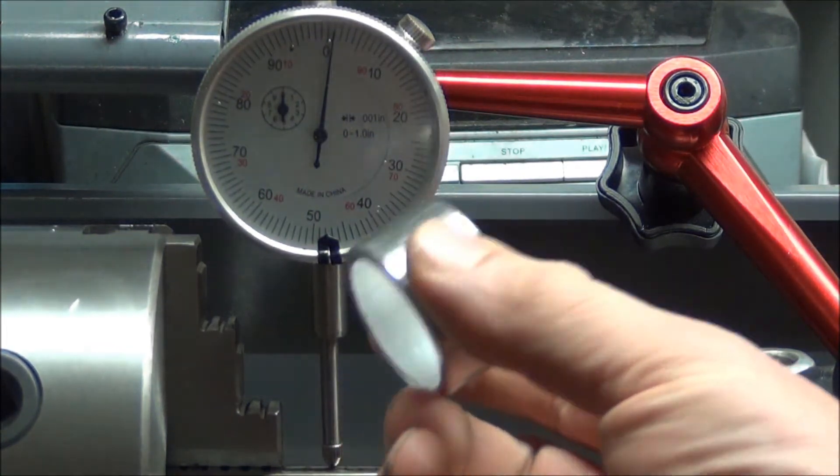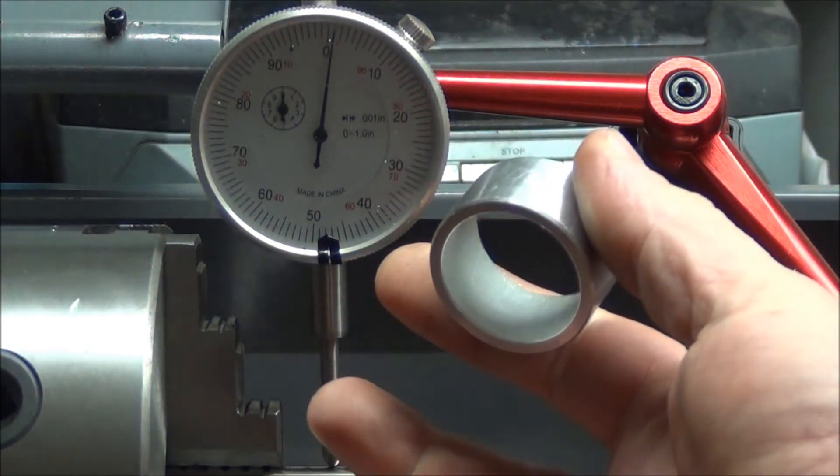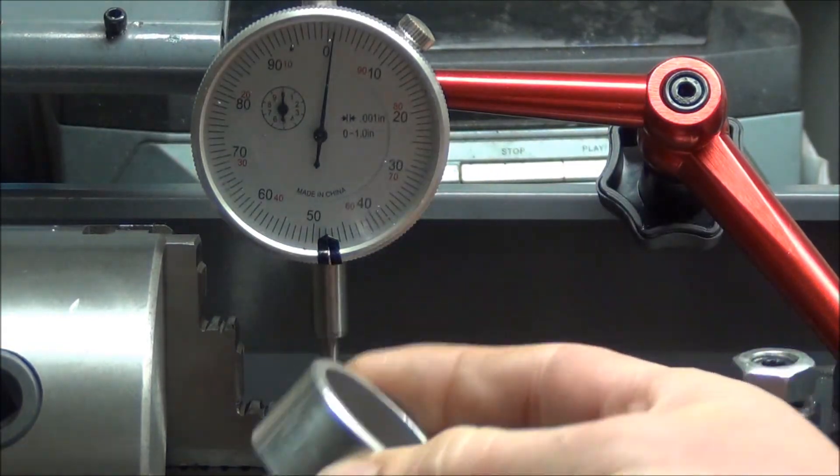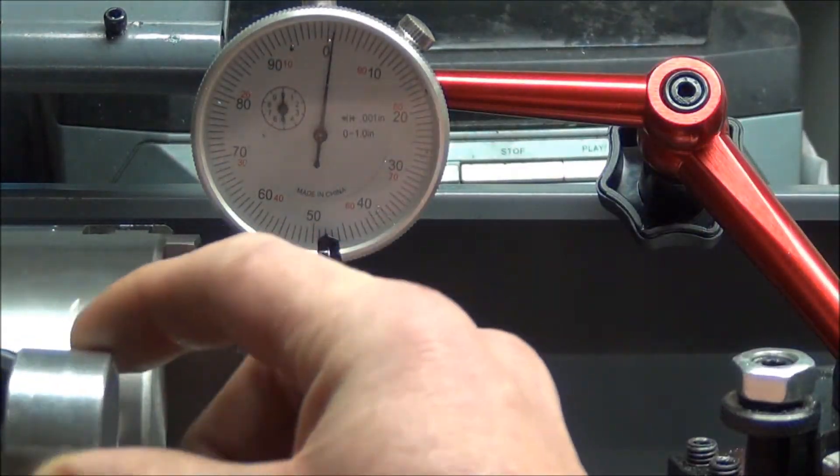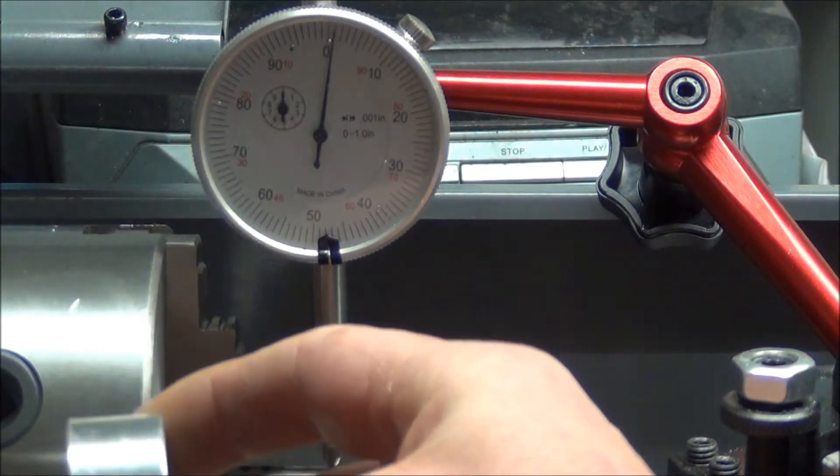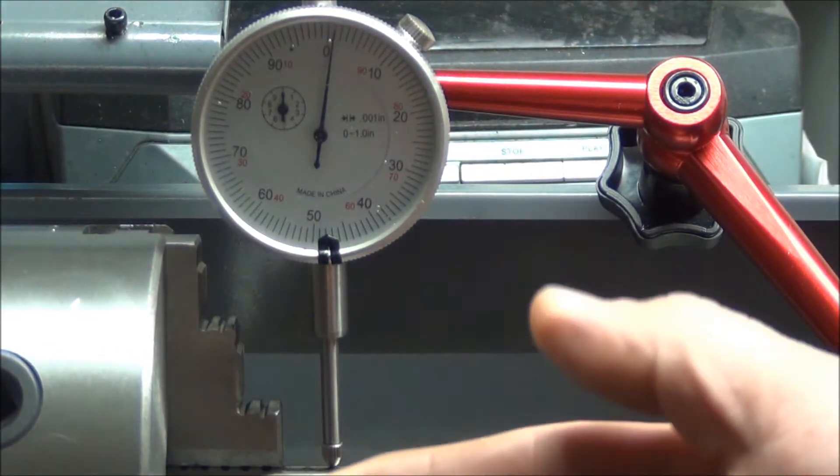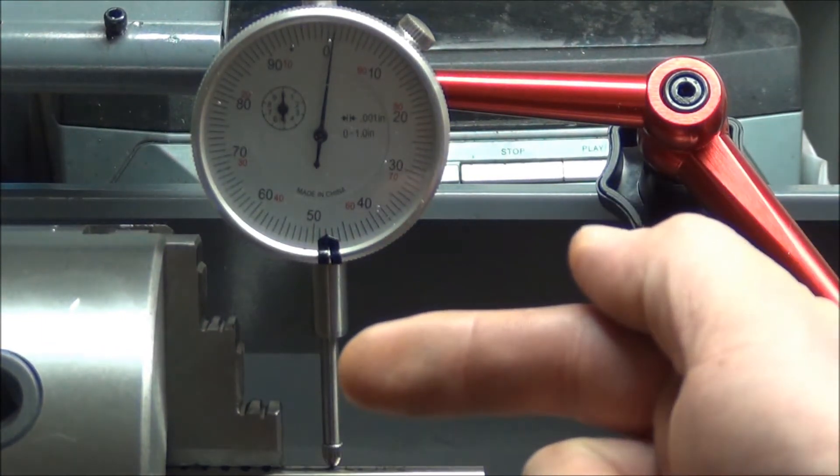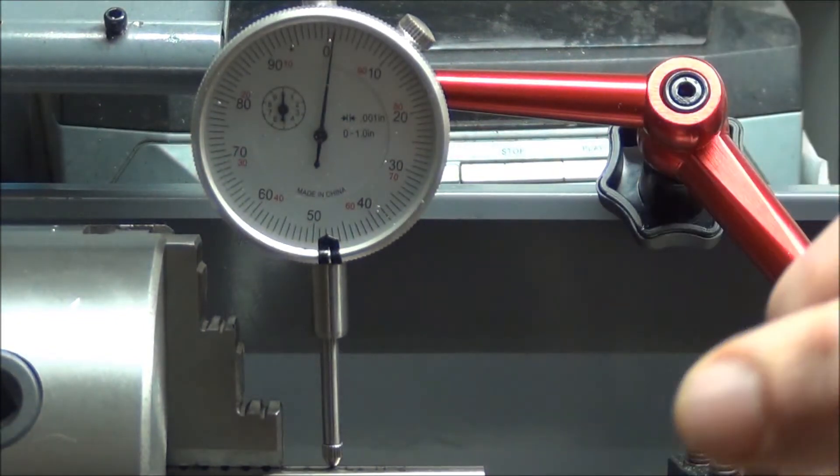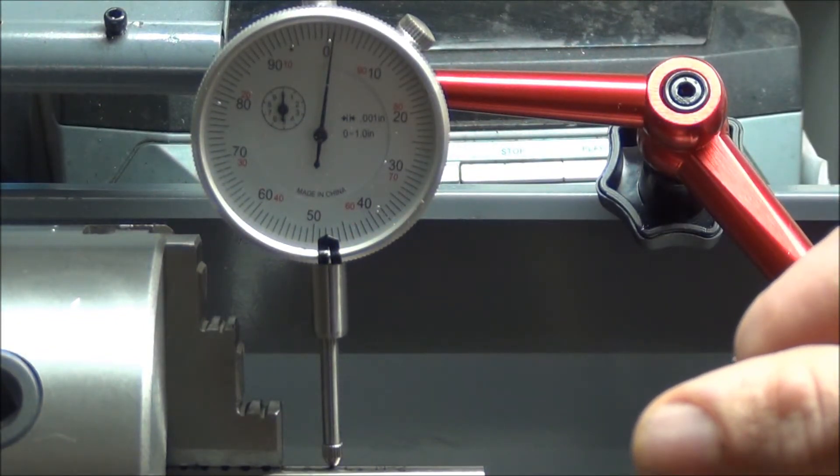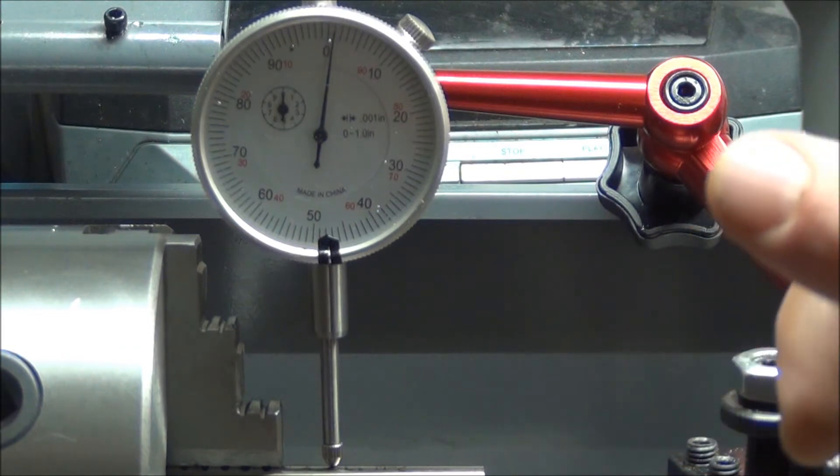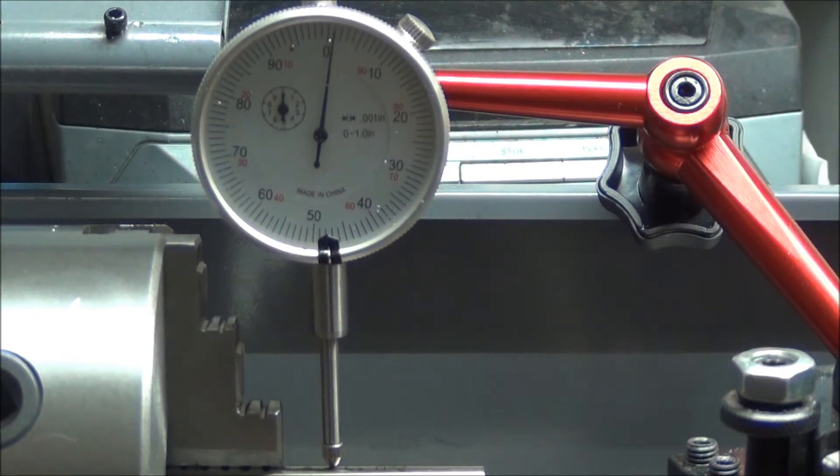I cut down the aluminum using the four-jaw, stuck it in the back side of the three-jaw, clamped down on it, and then ran the die grinder up into the jaws and took a little bit off at a time. That didn't really work that great.